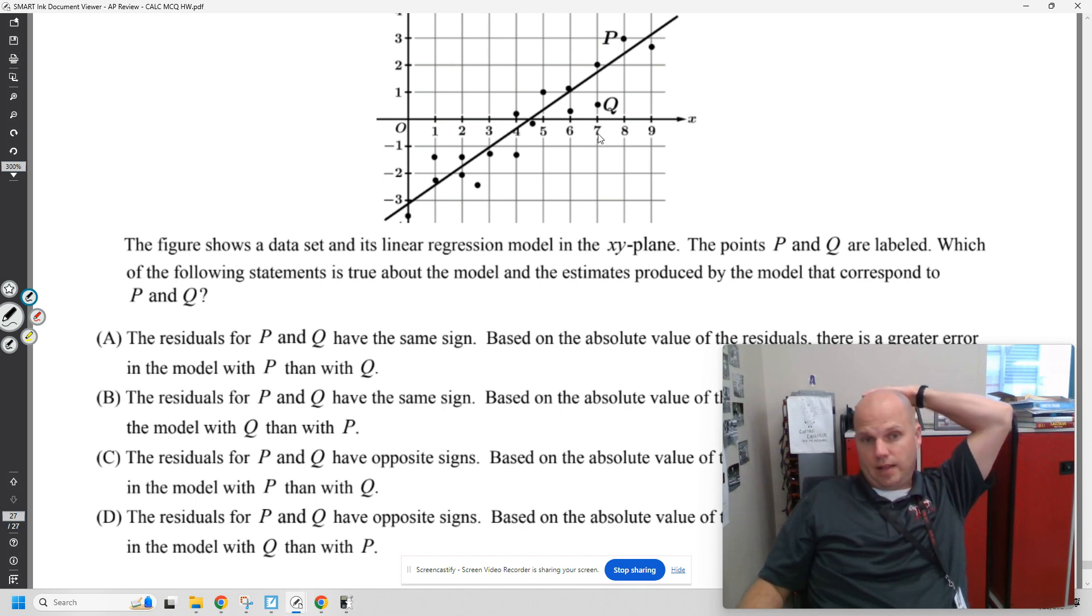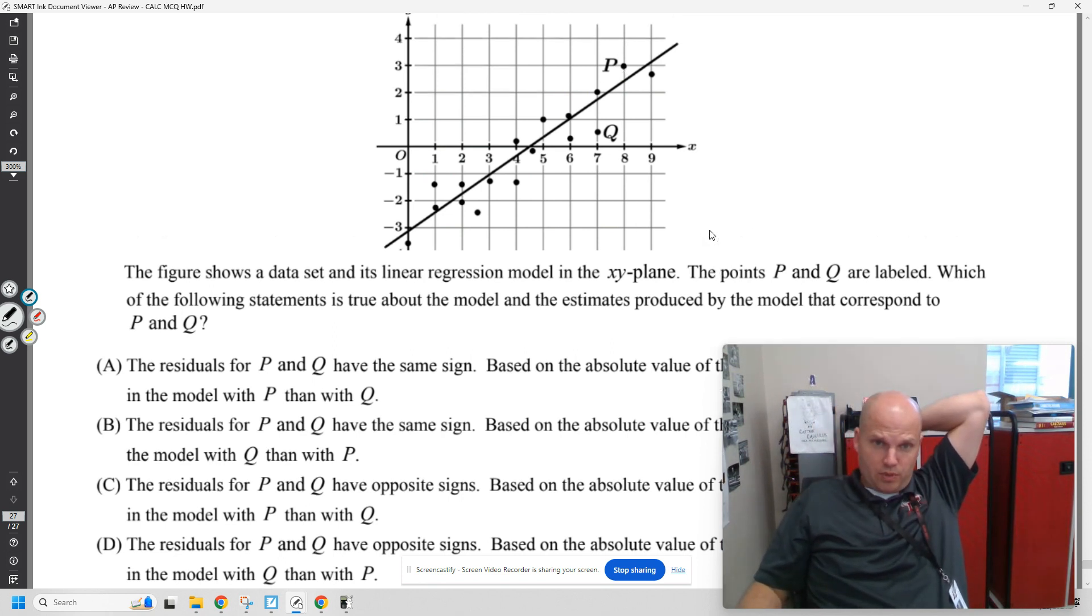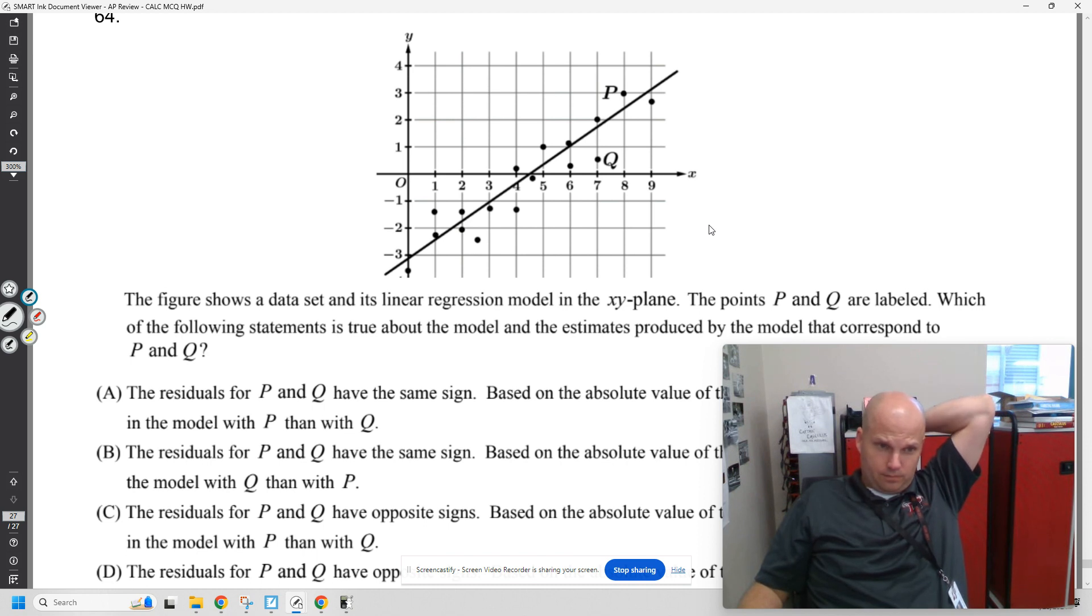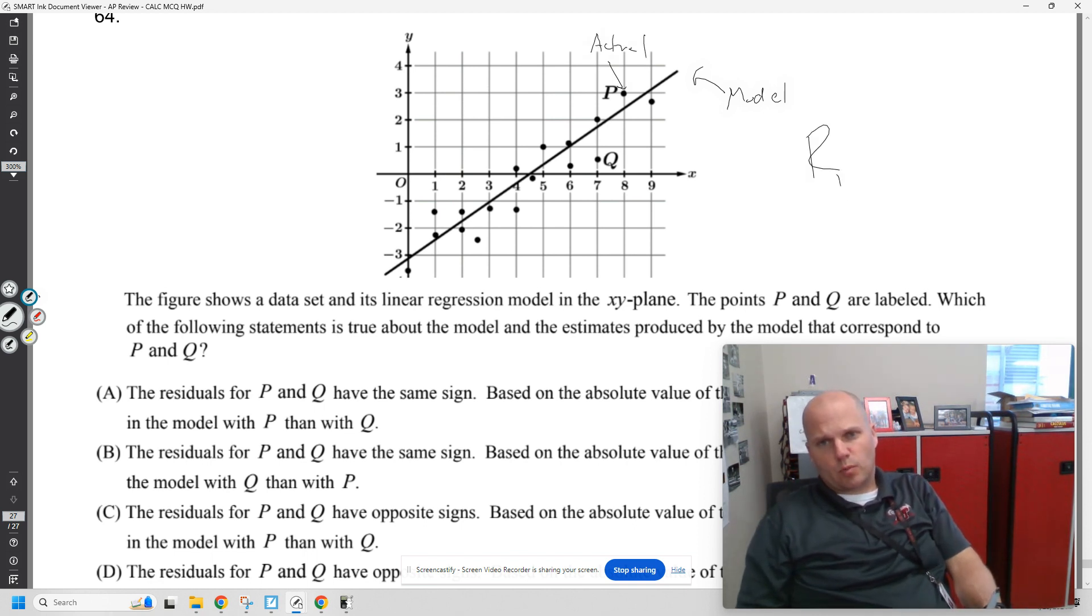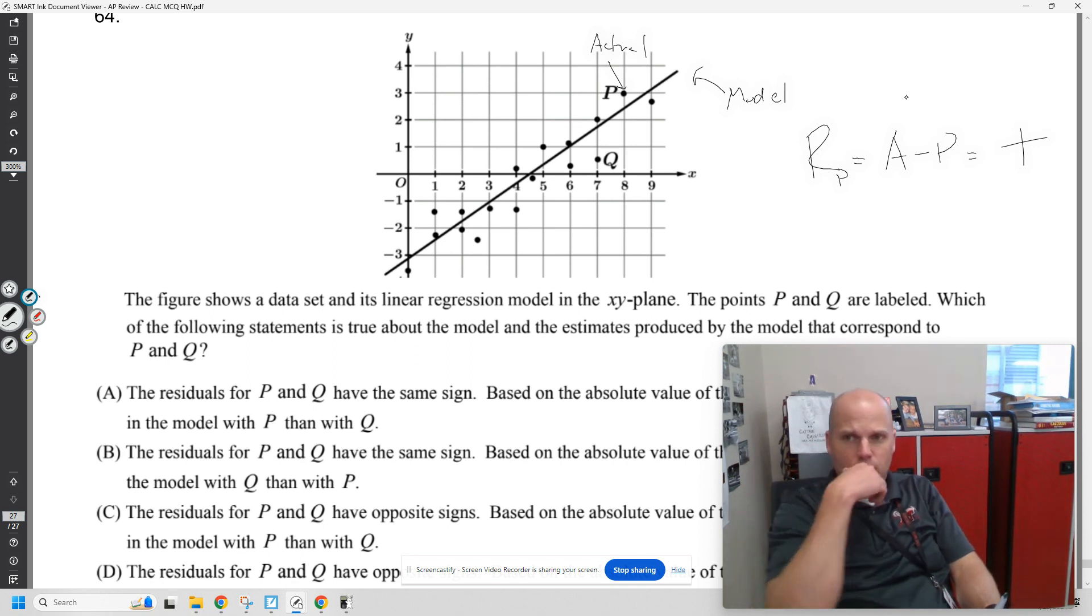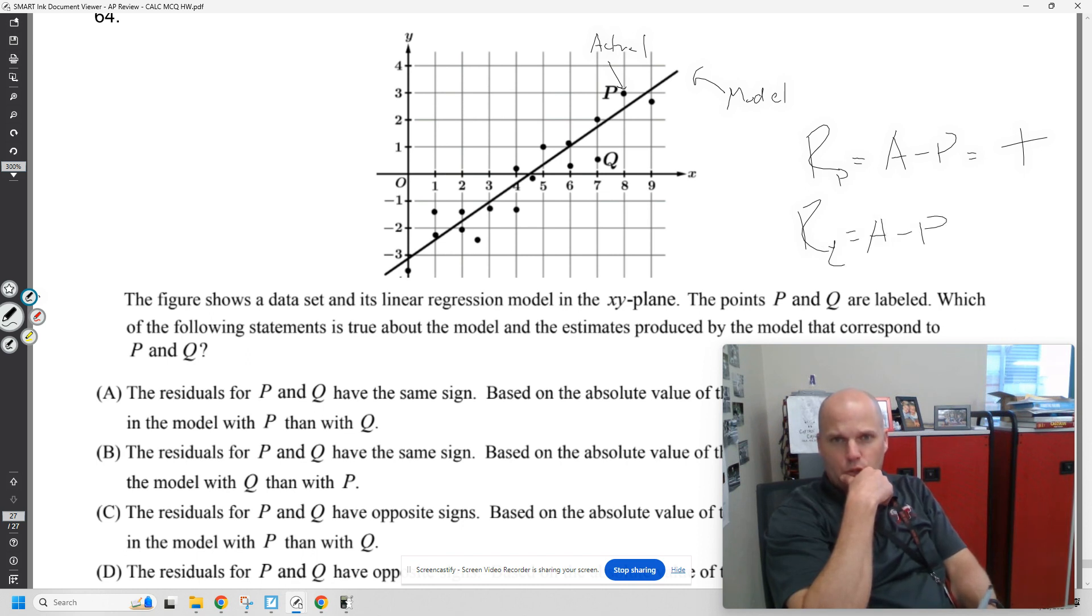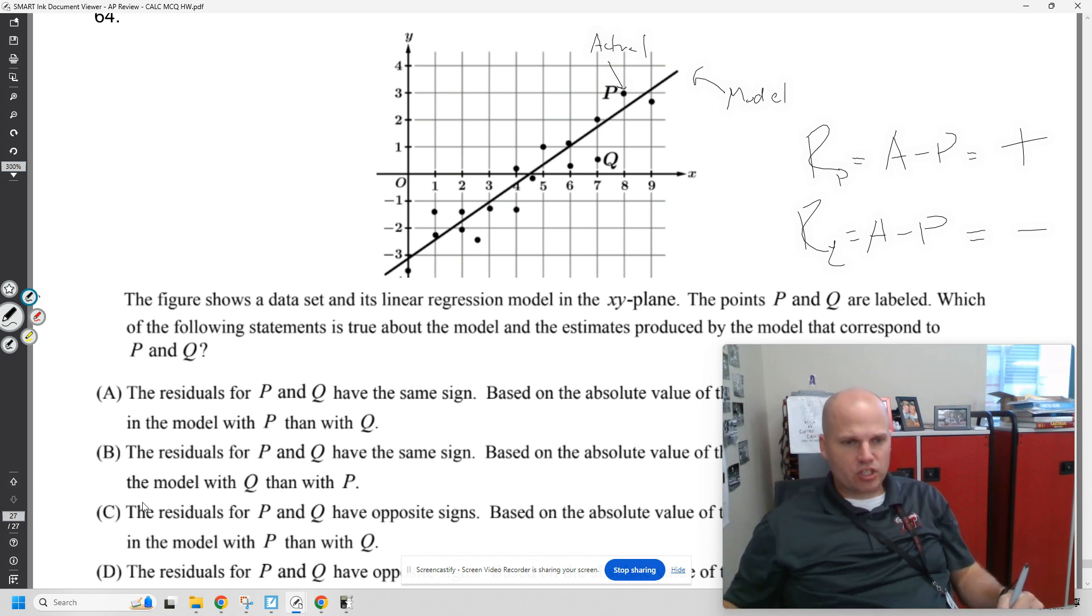P and Q, the residuals are not the same size. They have opposite signs. P will be, is these a residual plots? No. Let's make sure we understand this is our model. So, for the residual point P, my actual minus my predicted is going to be a positive value. My prediction is under the actual. My residual point Q, my actual minus predicted, this is less than that, is going to be negative. My model is going to be an overestimate. The residuals are going to have opposite signs. There will be more error here than there is here. It's a good question. It's just different than kind of what we've seen.